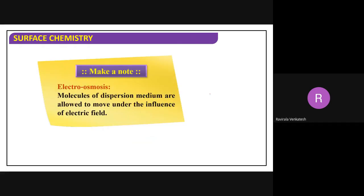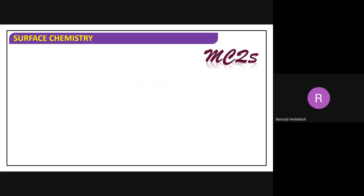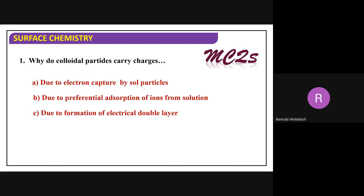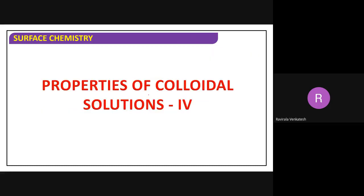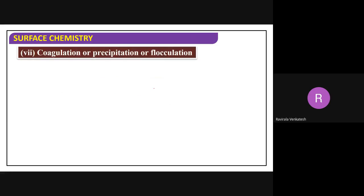In electro-osmosis, molecules of the dispersion medium are allowed to move under the influence of an electrical field. To summarize, why do colloidal particles carry charge? The reasons are: electron capture by sol particles, preferential adsorption of ions, and formation of an electrical double layer. Next: coagulation, precipitation, or flocculation — these terms all refer to the same process.